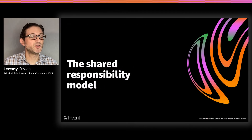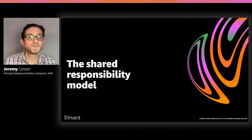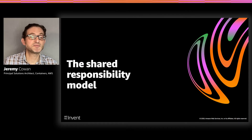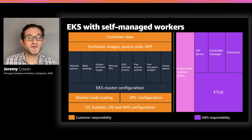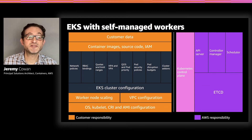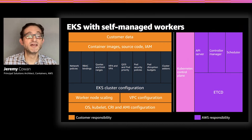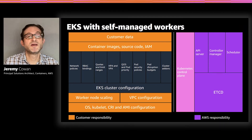Let's now look at the shared responsibility model. The shared responsibility model was created to illustrate what you, as a consumer of a managed service, are responsible for and what AWS, as the provider, is responsible for. With EKS, AWS is primarily responsible for the management of the Kubernetes control plane — consisting of components like the API server, the controller manager, the scheduler, and etcd. AWS can also manage elements of the data plane.